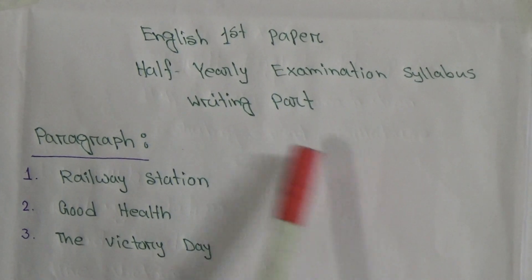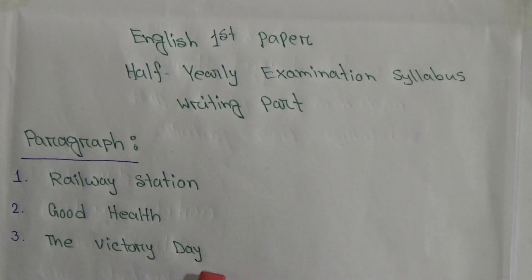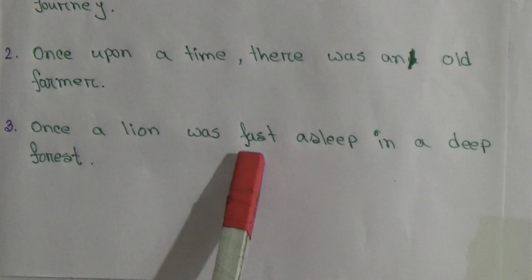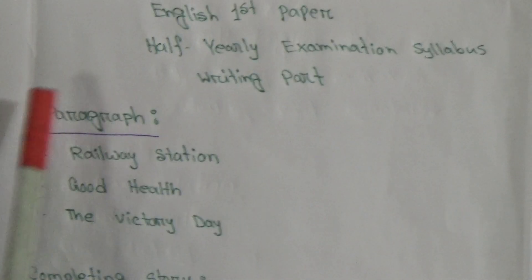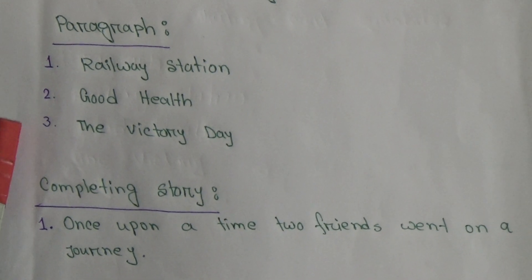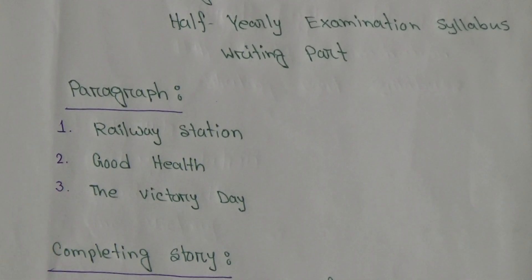Let's start our today's topic. Look at the board — this is very important for you. English First Paper Half Yearly Examination Syllabus, Writing Part. Your paragraph: 3 paragraphs — Number 1: Railway Station, Number 2: Good Health, Number 3: The Victory Day. And Completing Story: 3 stories — Number 1: Once upon a time two friends went on a journey. Number 2: Once upon a time there was an old farmer. Number 3: Once a lion was fast asleep in a deep forest. So this is your Half Yearly Examination Writing Part Syllabus: 3 paragraphs and 3 completing stories.